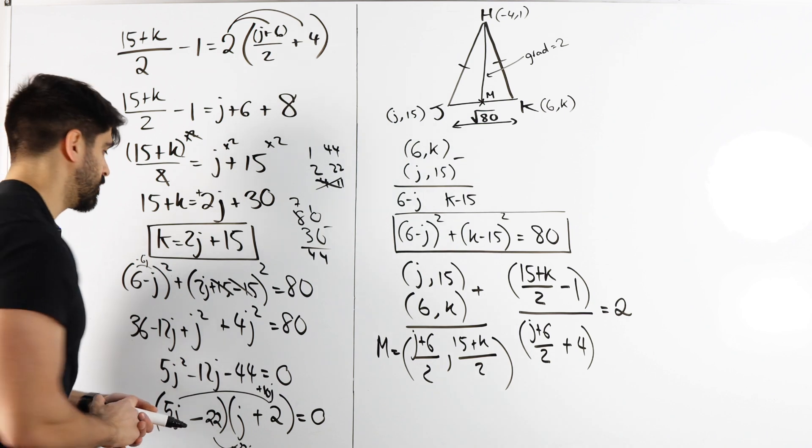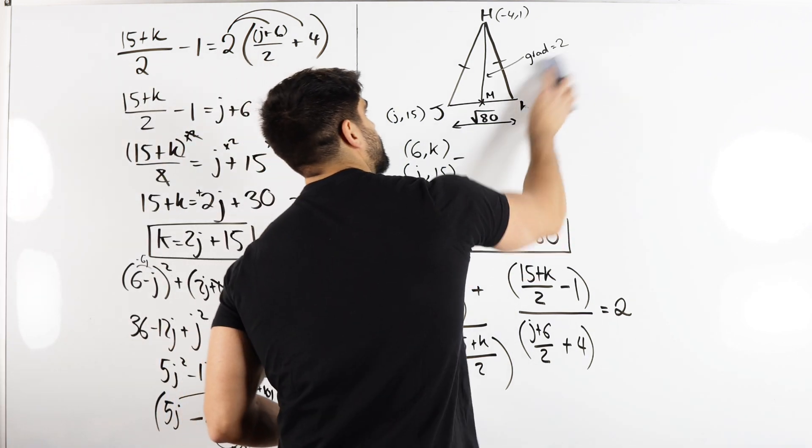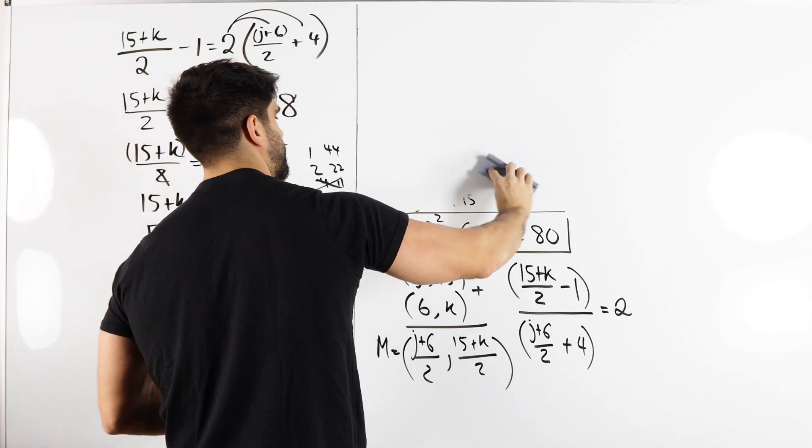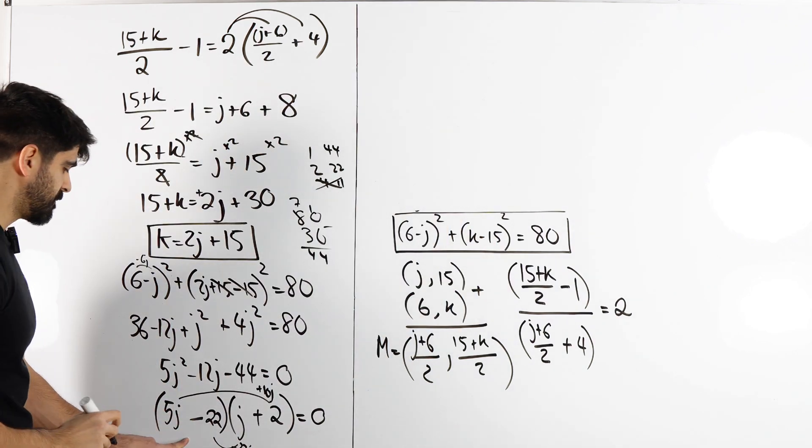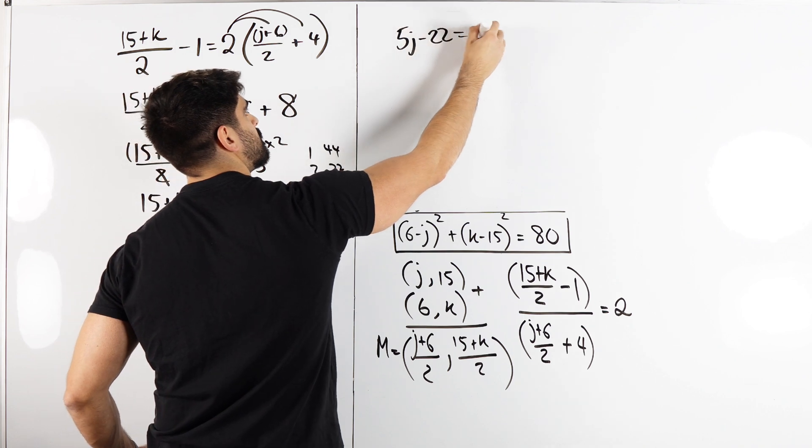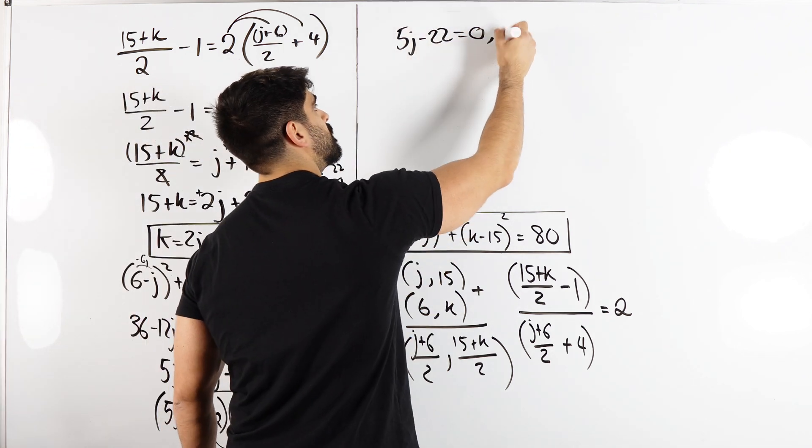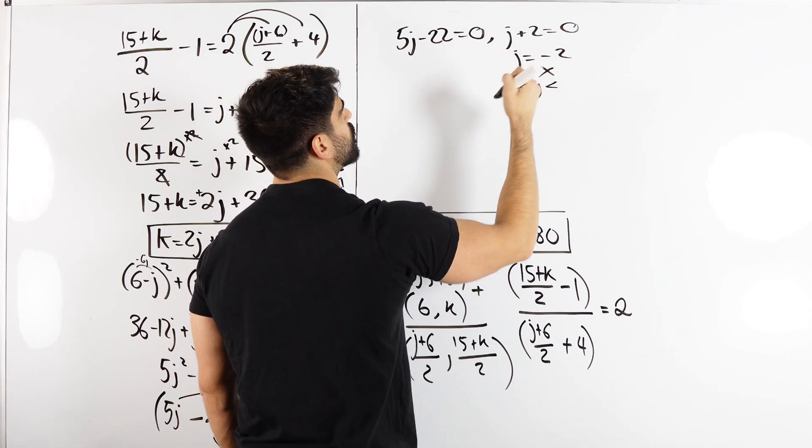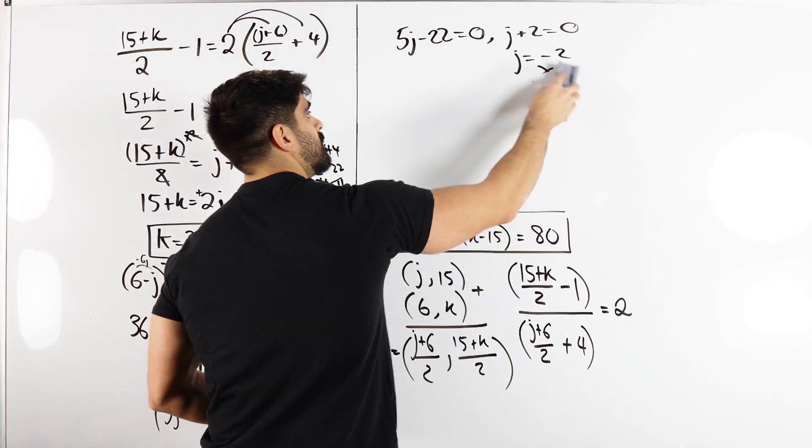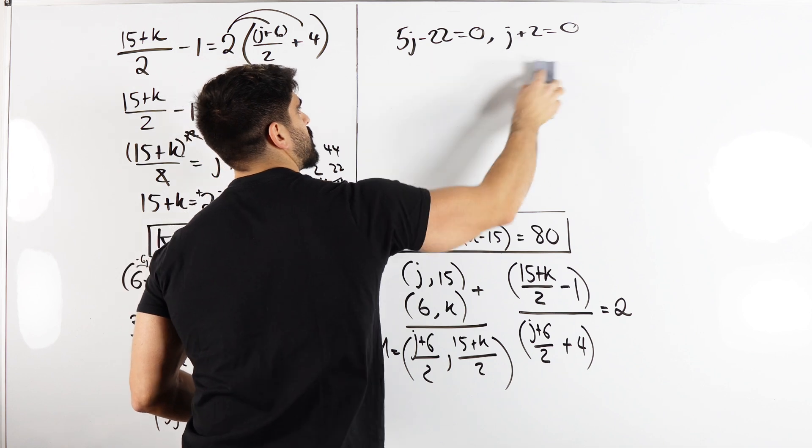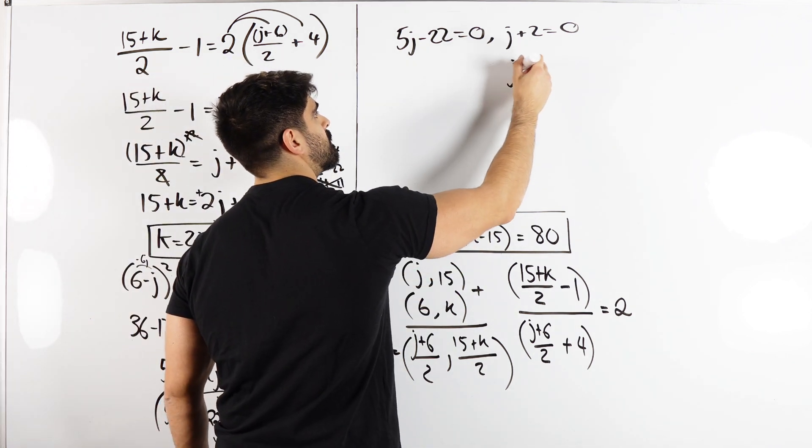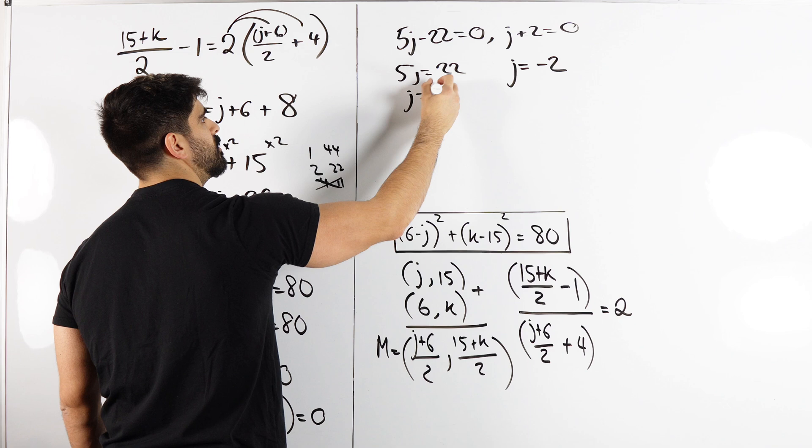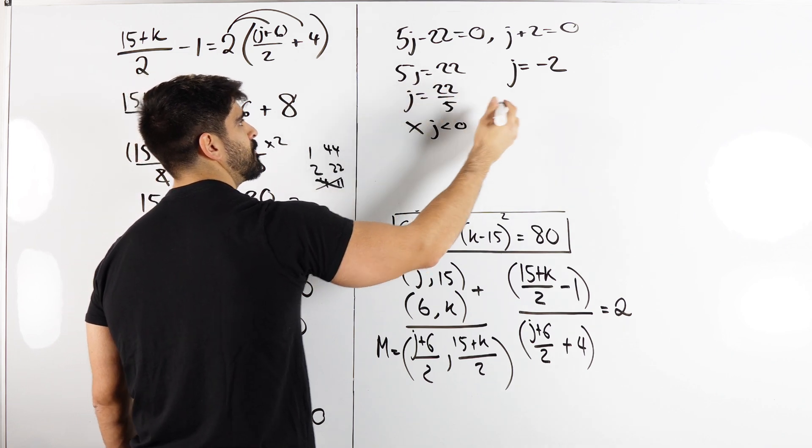Now, the question, if I remember correctly, did say J was negative. And I'm praying that was correct because I'm going to get two solutions here, but I'm only going to use one of them. So I have either 5J-22 = 0 or J+2 = 0. This is going to give me J = -2. It said J was negative, so that's the one we do want. Usually these things are positive, right? J is -2. Here you would get 5J = 22 then divide by 2, which is not allowed as J < 0.